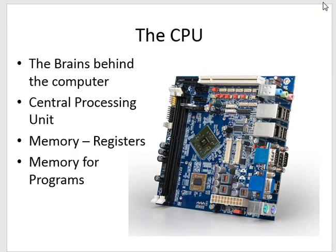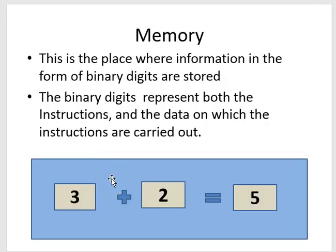So memory is the place where information in the form of binary digits are stored. The binary digits represent both the instructions and the data on which the instructions are carried out. For example, let's look at this blue bit. Let's say the blue bit is memory.